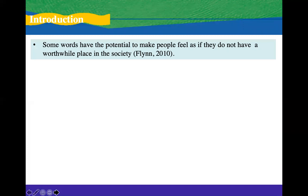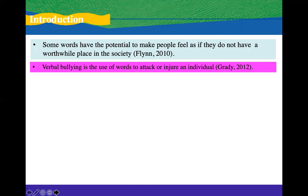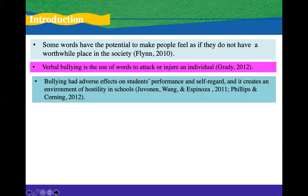Some words have the potential to make people feel as if they do not have a worthwhile place in the society, according to Flynn 2010. According to Grady 2012, verbal bullying is the use of words to attack or injure an individual. Verbal bullying had adverse effects on students' performance and self-regard, and it creates an environment of hostility in schools, according to Giovanin, Wang, and Espinoza 2011, and Phillips and Corning 2012.